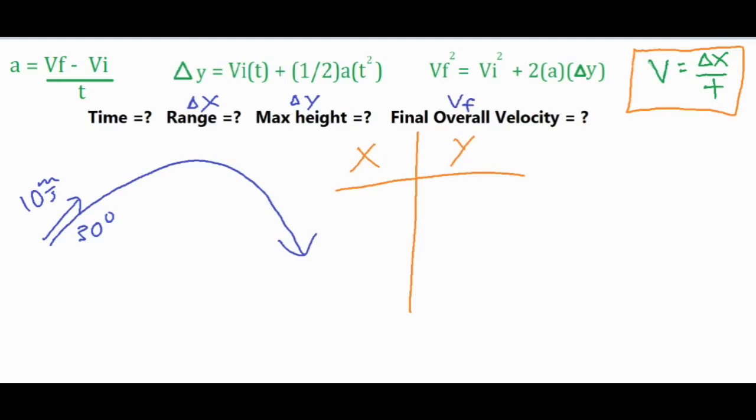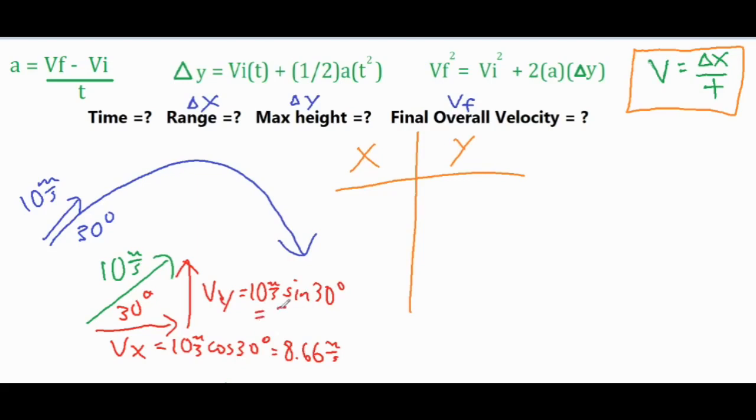Our first step is to take our velocity and break it up into its x and y components because the 10 meters per second doesn't fit into a horizontal or vertical column. We want to find Vx and Vy using this 30 degree angle and our hypotenuse of 10. For the Vx, this is the side adjacent to the 30 degree angle, so we're going to use cosine. Vx is 10 meters per second times cosine of 30 degrees, which gives us 8.66 meters per second. For the y side it's opposite the 30 degree angle, so we use sine. 10 meters per second times sine of 30 degrees gives us 5 meters per second.